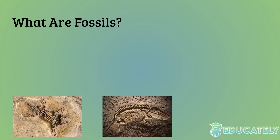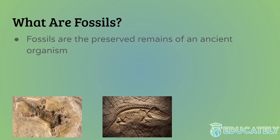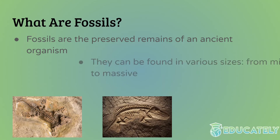First, we're just going to talk about what fossils are really quickly. Fossils are the preserved remains of an ancient organism. It doesn't necessarily have to be the actual organism itself. Many of you might know that dinosaur bones are a fossil — that's a pretty good example. But it's not necessarily the actual physical remains. It can also just be imprints left, like a footprint or the imprint of a body.